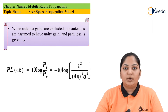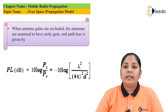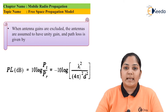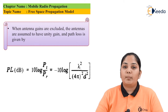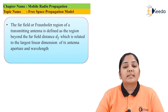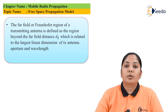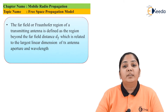When the antenna gains are excluded and the antennas are assumed to have unit gain, the path loss formula reduces to: PL (dB) = 10 log(Pt / Pr) = −10 log[λ² / ((4π)² × d²)].